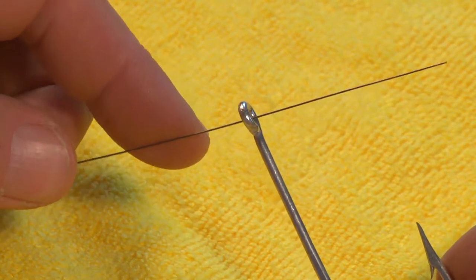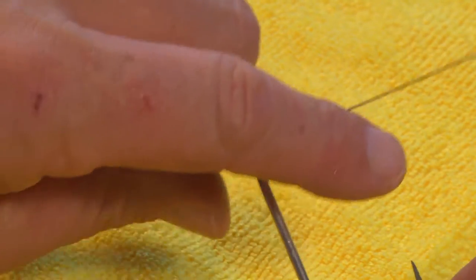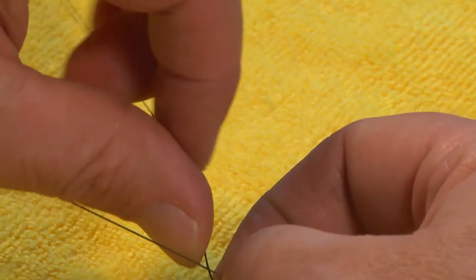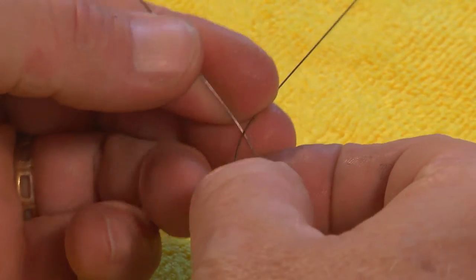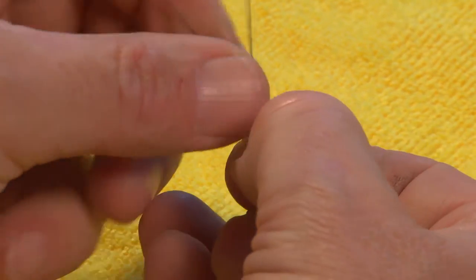Now I've got 80 pound single strand wire here. I've run it through the eye of the hook. I'm going to bend it back on itself and form a loop that looks like an X, or a V.